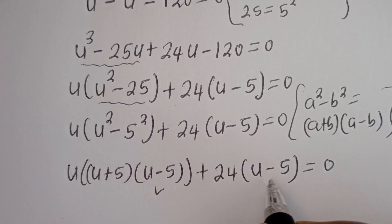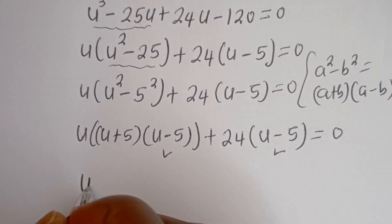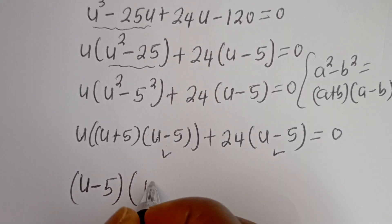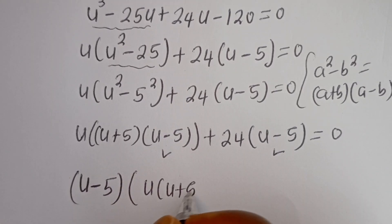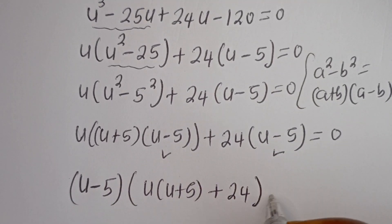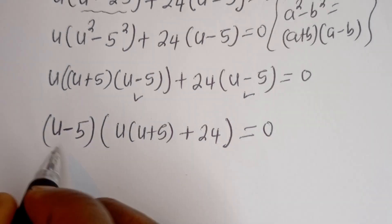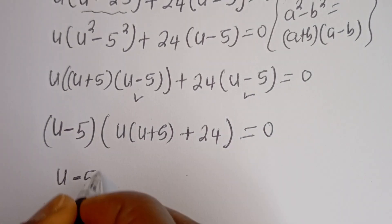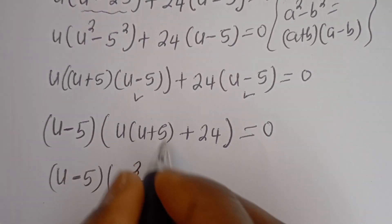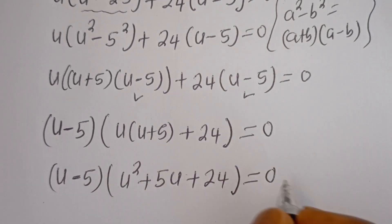Then we have u bracket (u plus 5)(u minus 5), plus 24 bracket (u minus 5), is equal to 0. Now you can see that (u minus 5) is common in both terms — let's bring it out. We have (u minus 5) bracket u(u plus 5) plus 24, is equal to 0. Expanding: (u minus 5) bracket u squared plus 5u plus 24, is equal to 0.